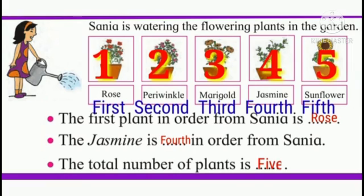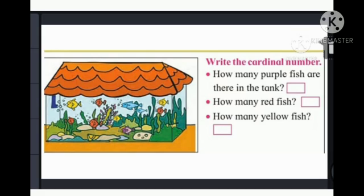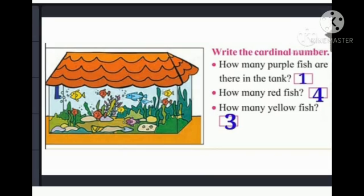Now, next example: Write the Cardinal Numbers. How many purple fish are there in the tank? Tell me children. Very good — 1. How many red fish? 4. Very good. How many yellow fish? Yes — 3. Very good.